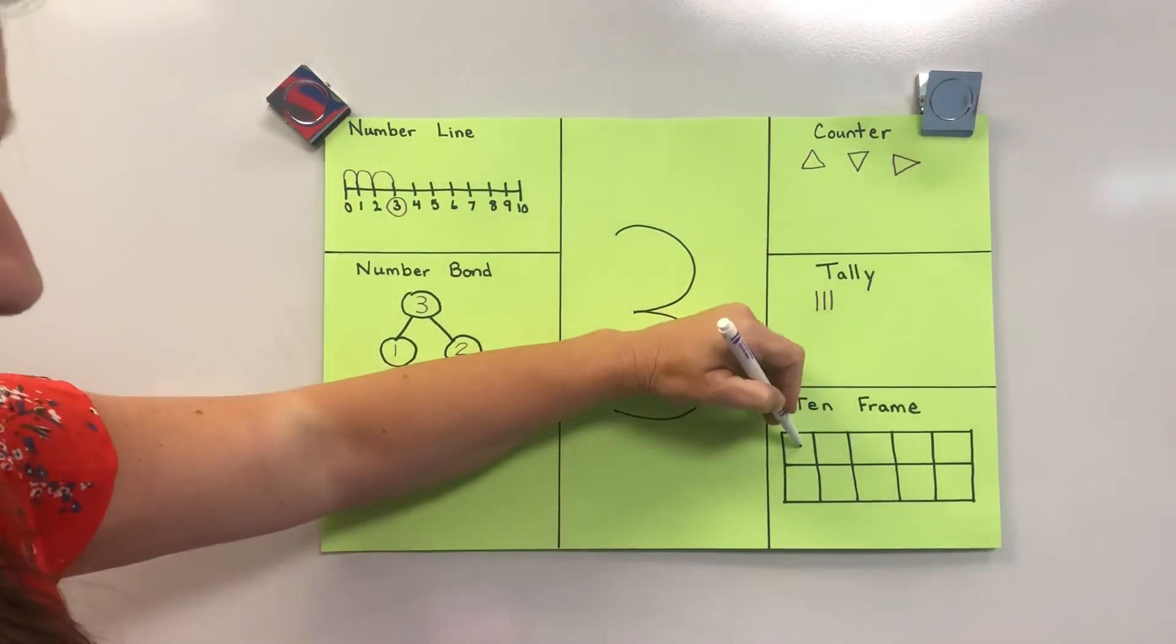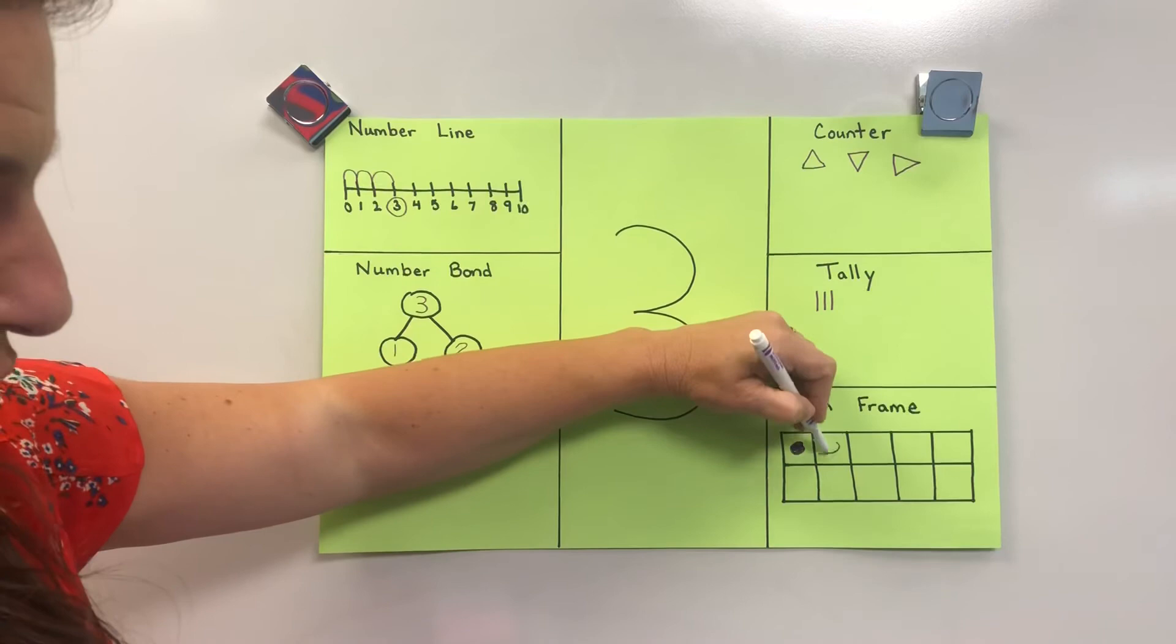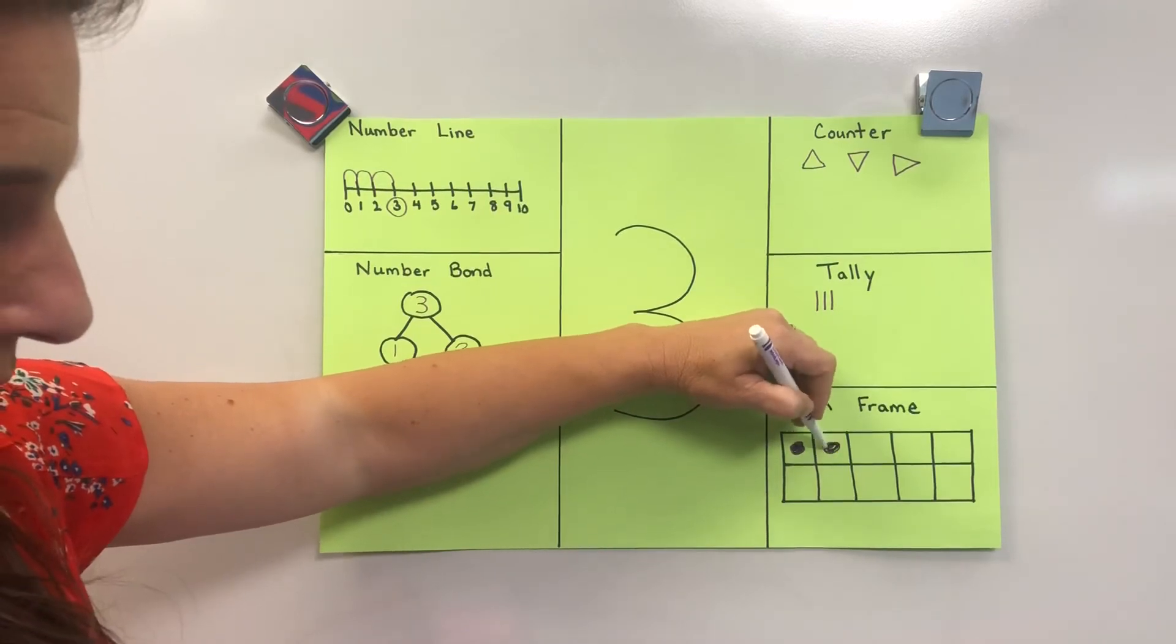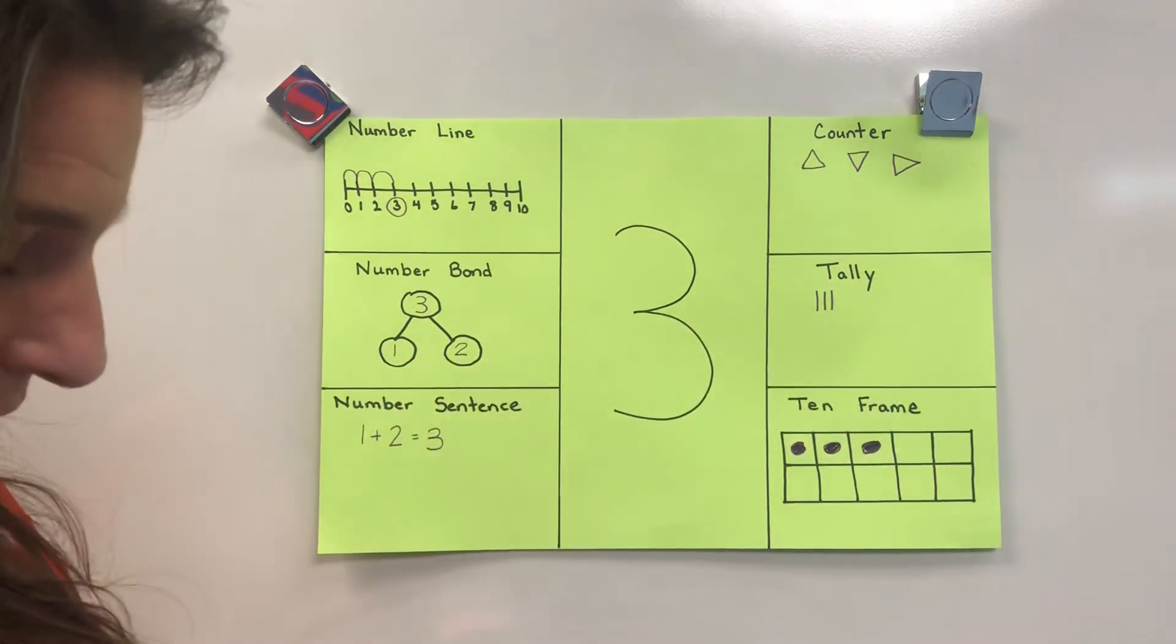On a ten frame, this is what three looks like. One, two, and three.